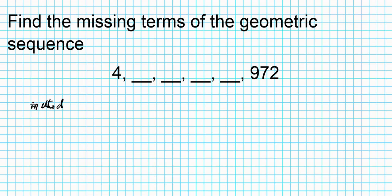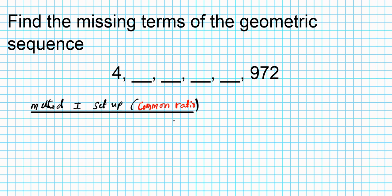Method one — I'm going to call this the common ratio method. Remember, what we're looking for here is a common ratio so that we can generate the terms by repeated multiplication. A geometric sequence is created by multiplying a previous term by the same constant known as the common ratio. Repeated multiplication by the common ratio will generate the terms of the geometric sequence.